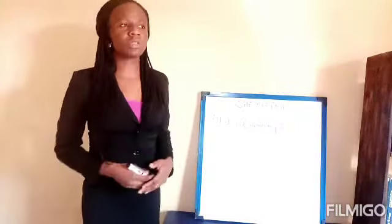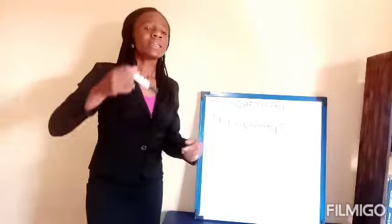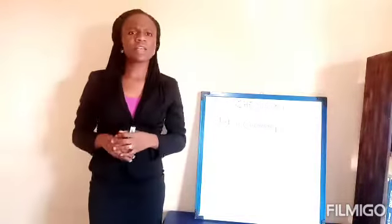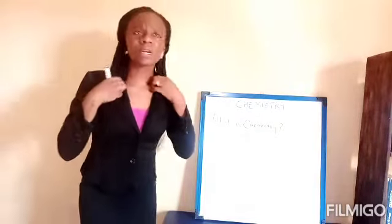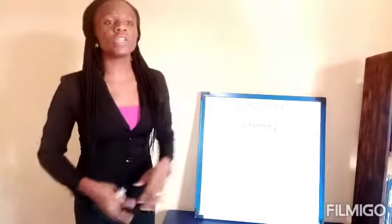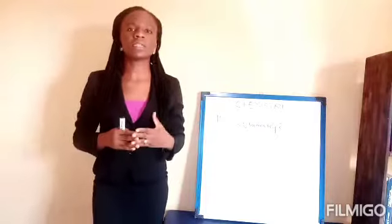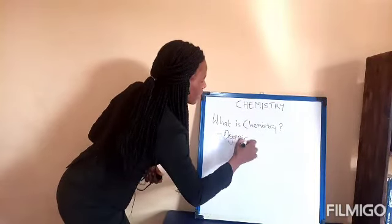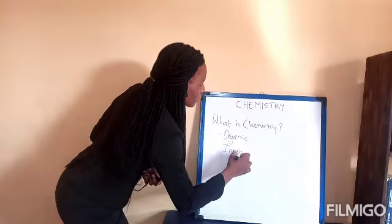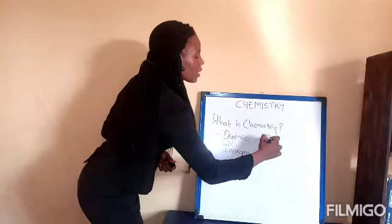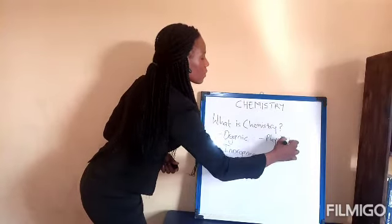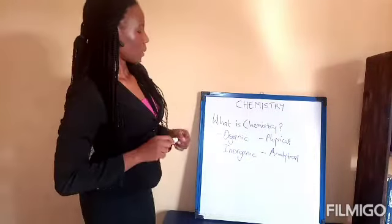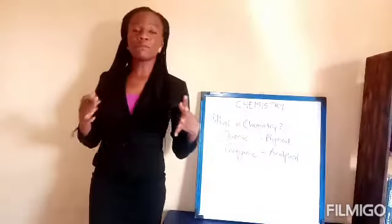You're going to see a whole lot of other definitions of chemistry, but at the end of the day, chemistry wants to study the properties, the structure, and the composition of matter. There are various branches of chemistry, but chemistry is divided into four broad major branches. We have organic chemistry, inorganic chemistry, physical chemistry, and analytical chemistry.